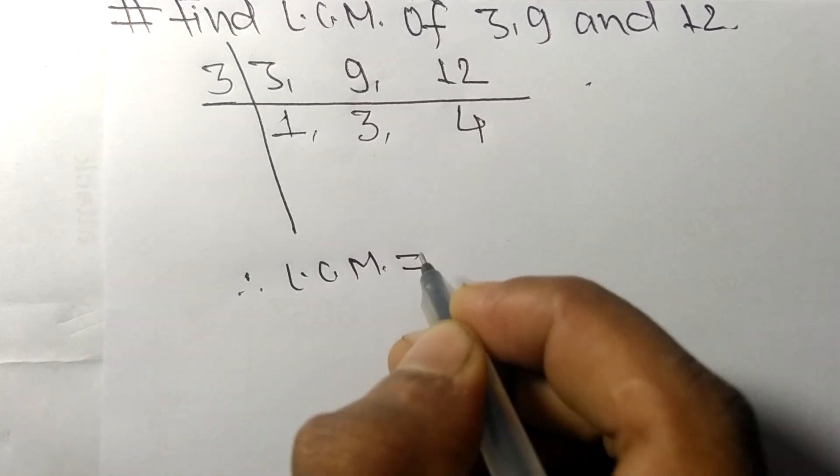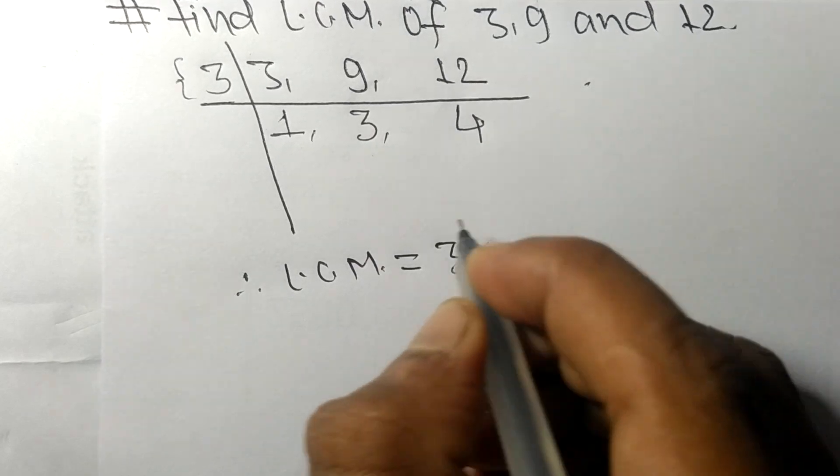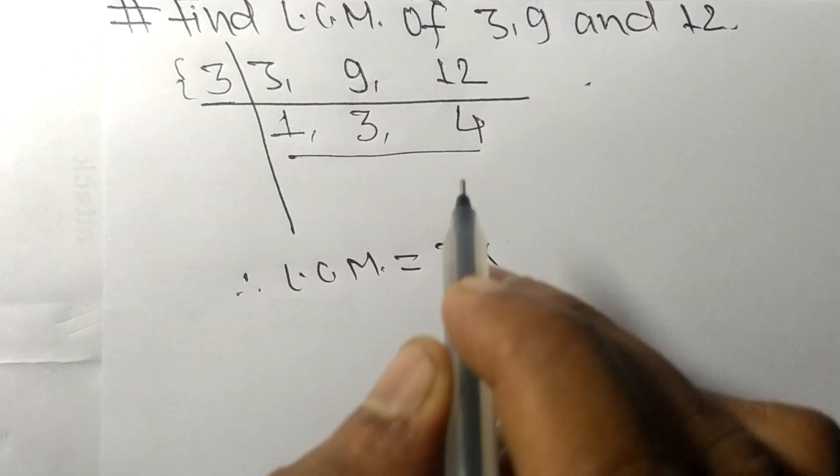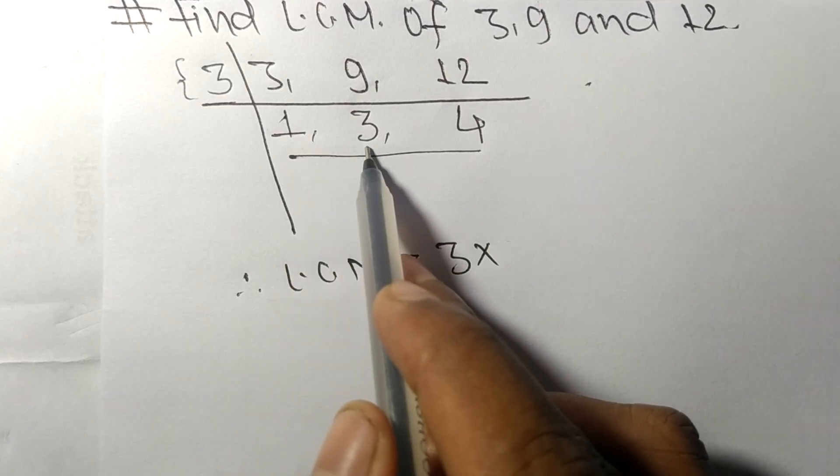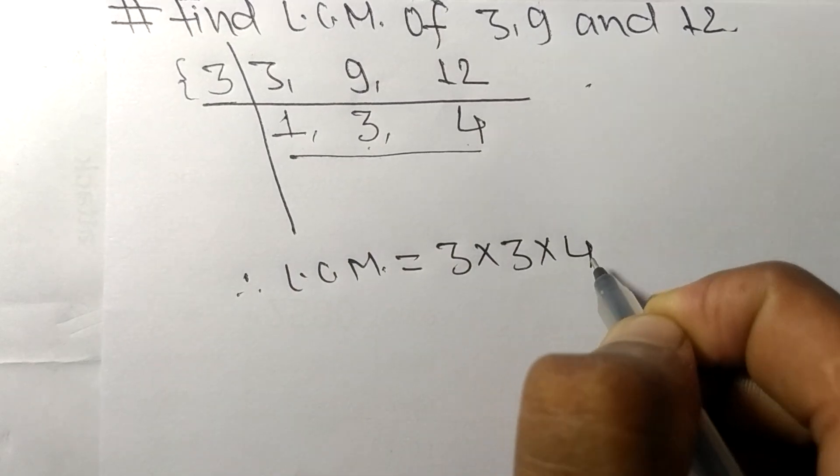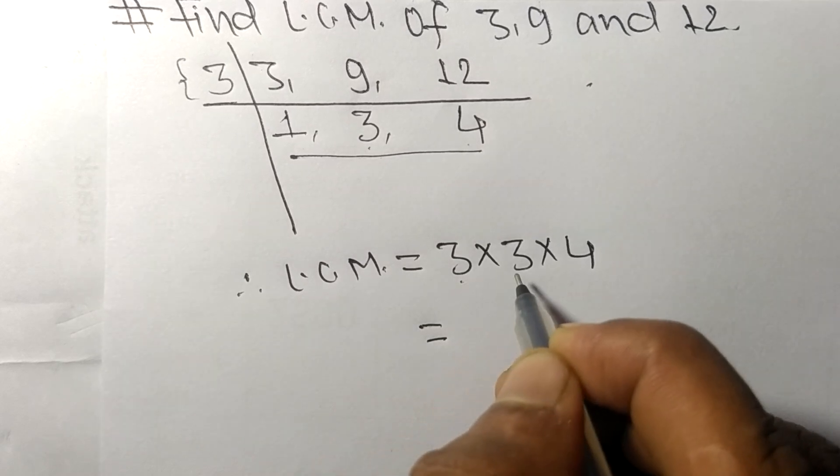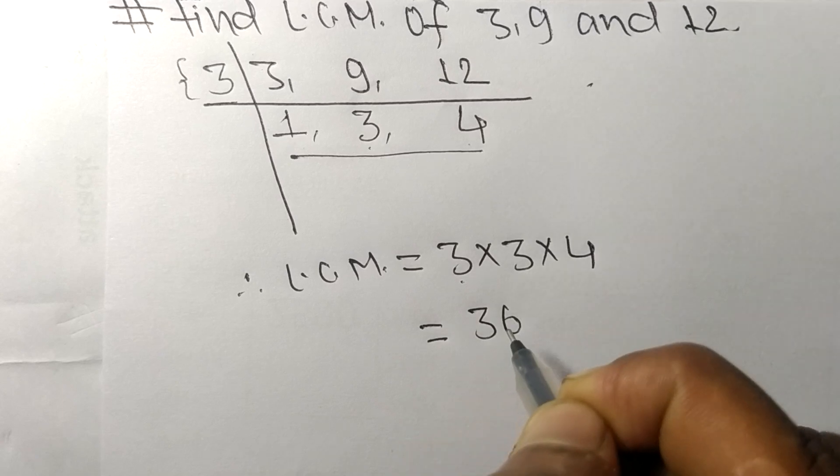So the LCM is equal to 3 from this side, and from this side we choose the numbers greater than 1, that is 3 and 4. So 3 times 3 equals 9, 9 times 4 equals 36.